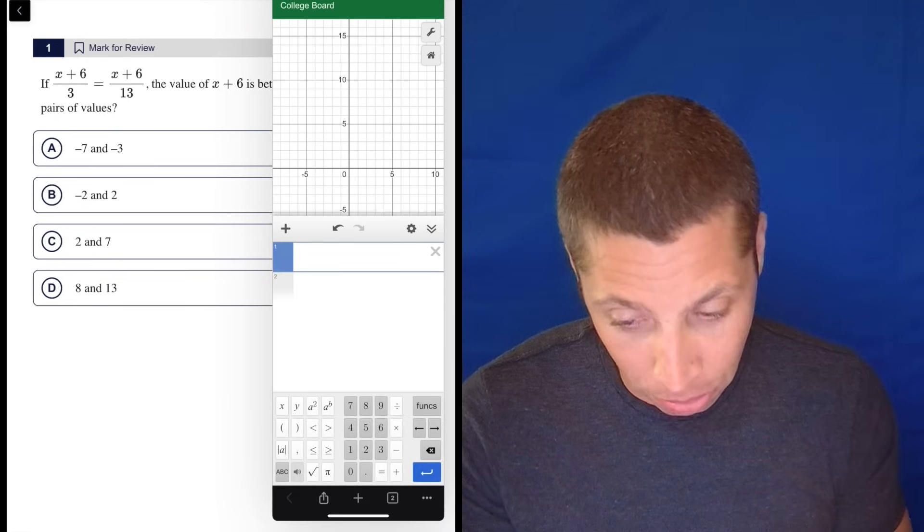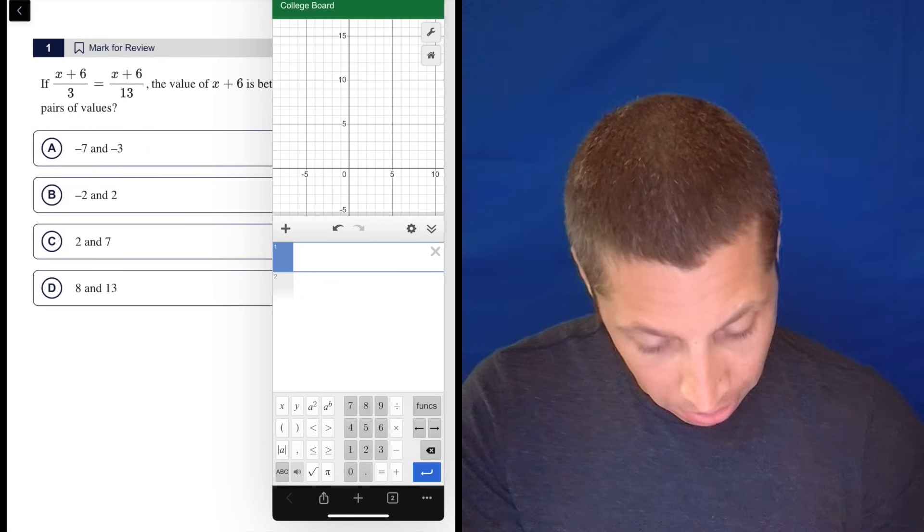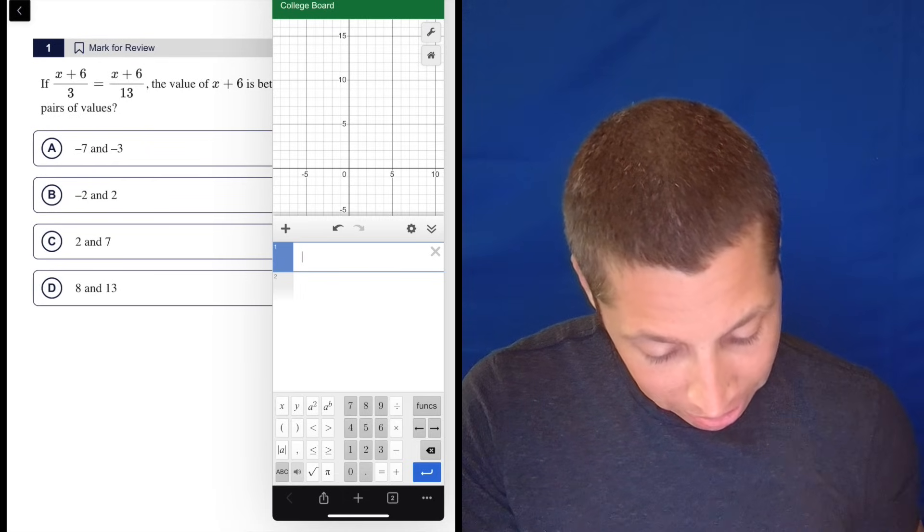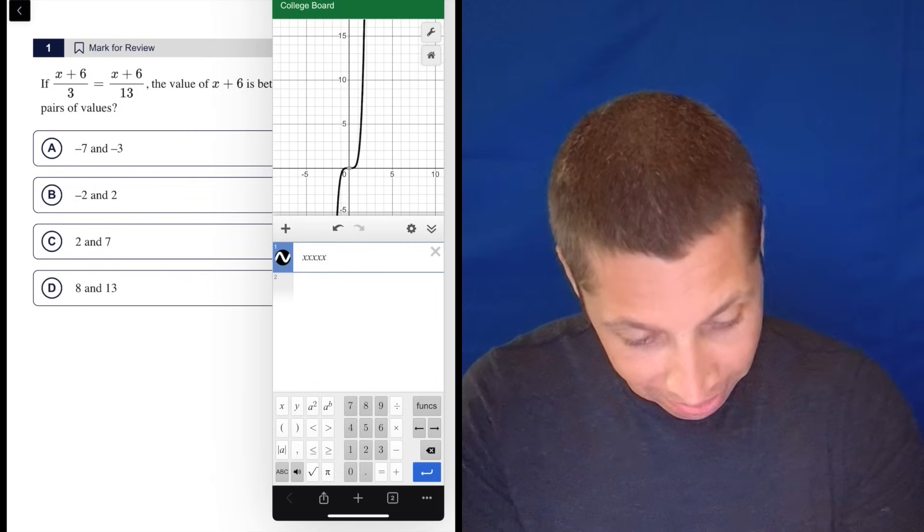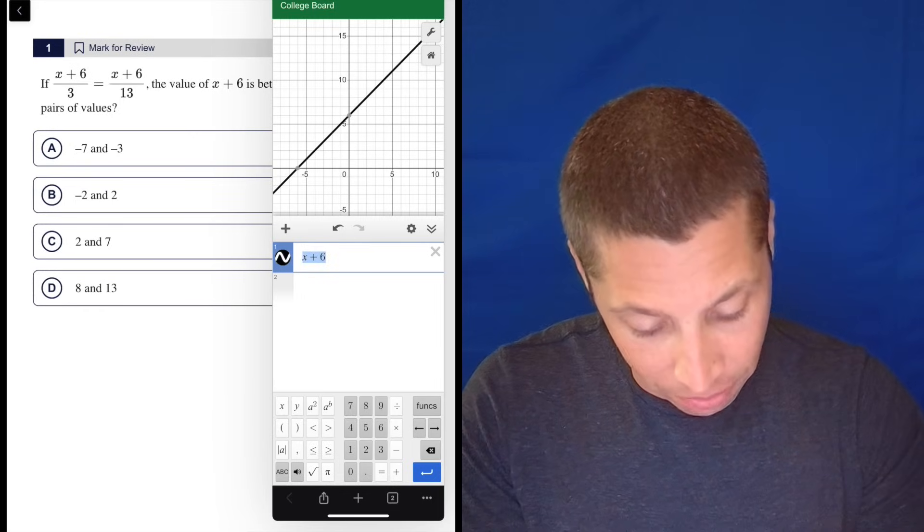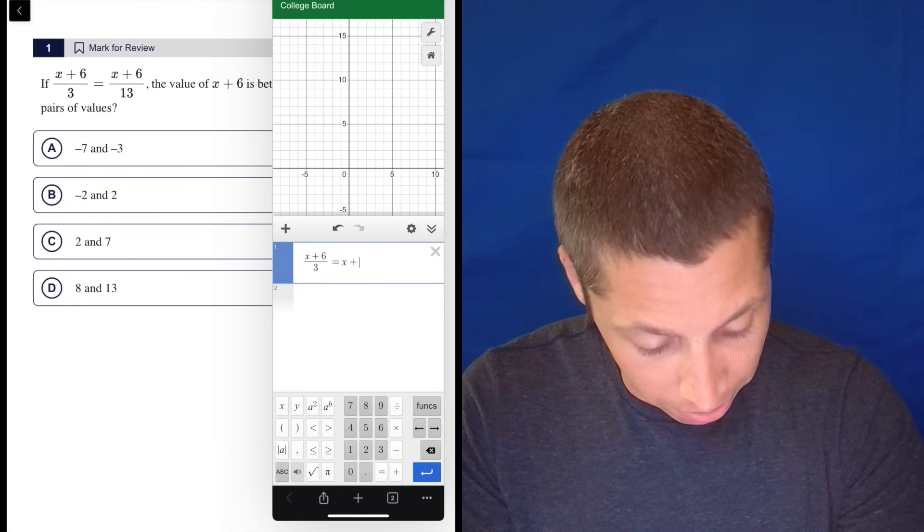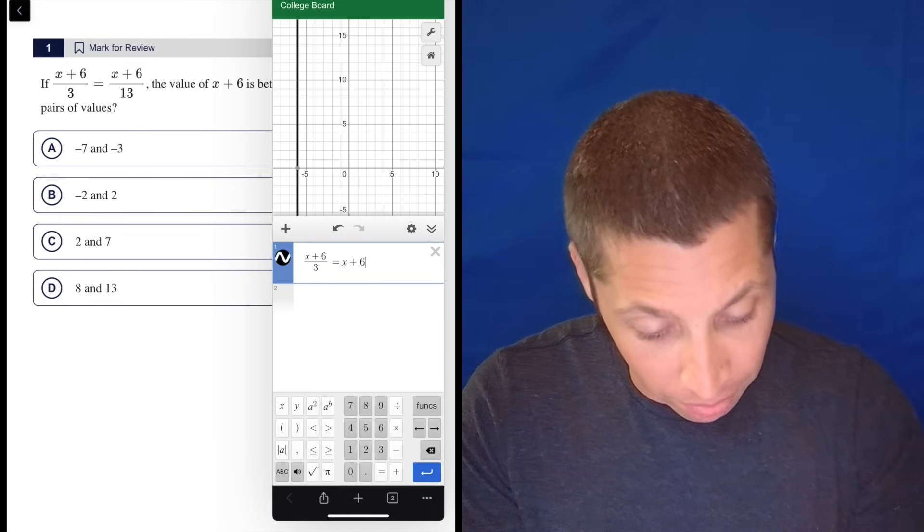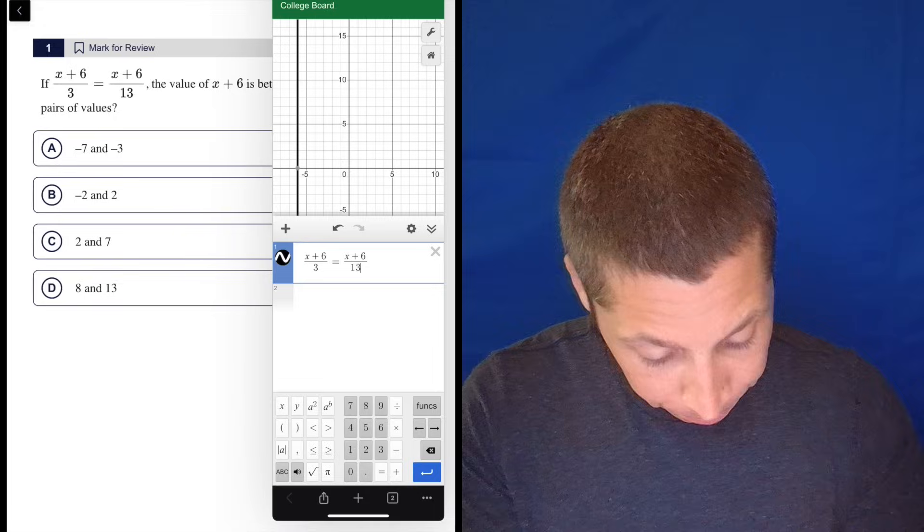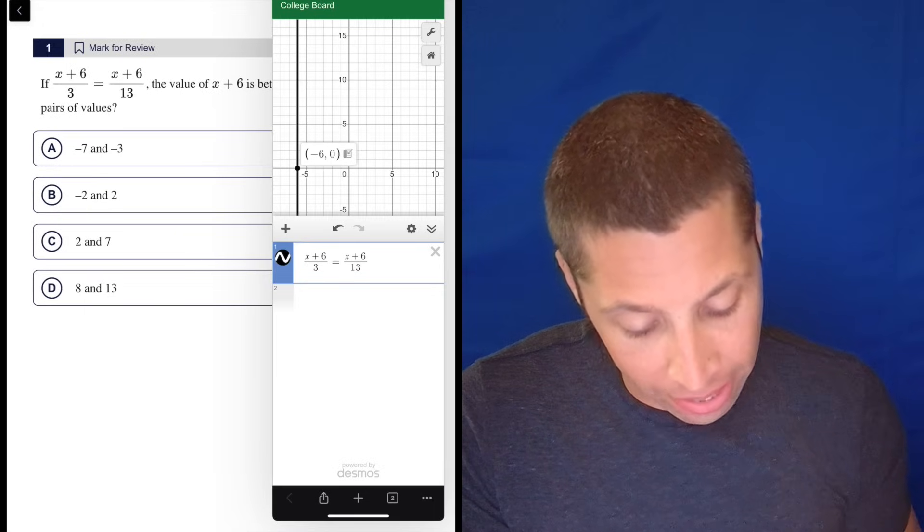some algebra, we can just type it into Desmos. Let's see if this works here. So X, my keyboard's not working. That was what I wanted. Oh, there it is. So X plus six divided by three is equal to X plus six divided by 13. And what happens? What do we get? We get X is negative six.